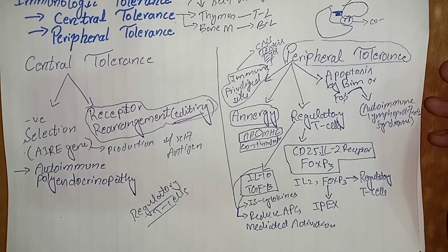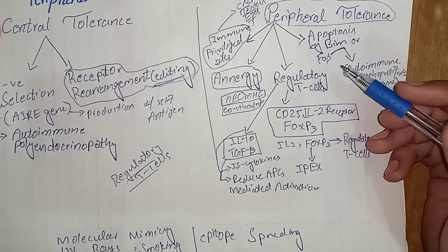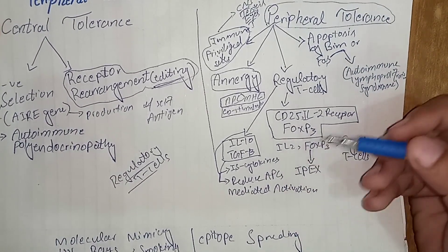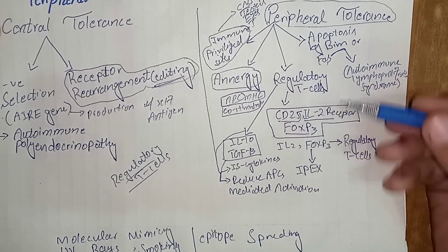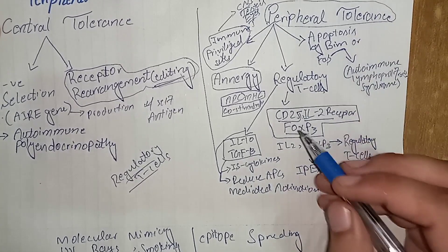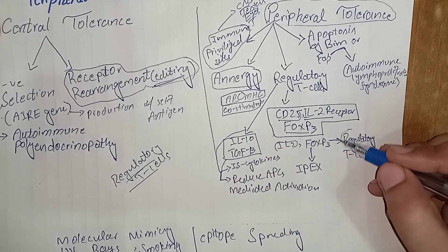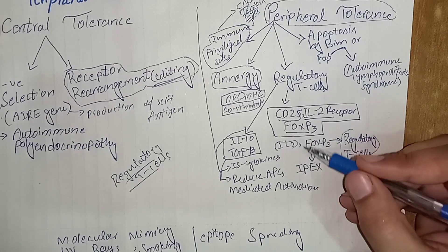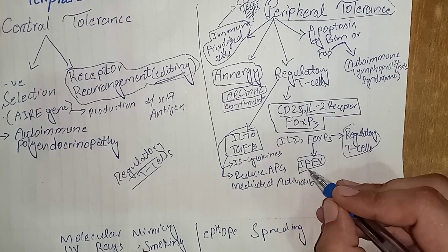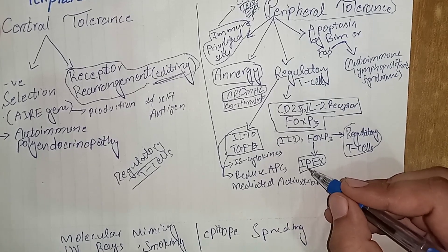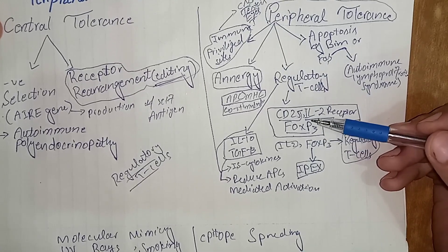Regulatory T cells are cells that escape central tolerance and express different proteins on their surface, including the CD25 receptor (interleukin-2 receptor) and FOXP3. How they prevent autoimmune response is not clearly understood, but interleukin-2 receptor and FOXP3 are very necessary for proper functioning of regulatory T cells. If mutation occurs in FOXP3, it leads to IPEX syndrome — which stands for Immune dysregulation, Polyendocrinopathy, Enteropathy, X-linked — characterized by widespread autoimmune manifestations.